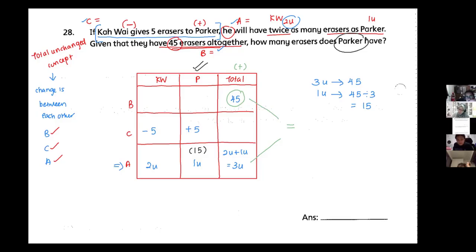He has 15. He was actually given five from Kawai. So at first, how many does he have? So 15 here will be plus five, right? You need to go backwards. So 15 minus five equals to 10. This is minus. So 15 minus five equals to 10. So Paka have how many at first? 10.